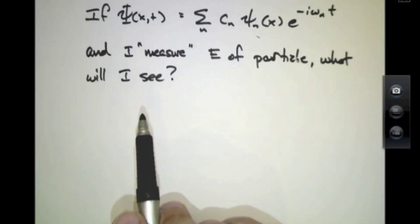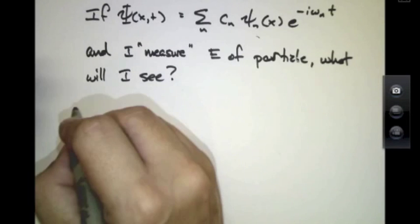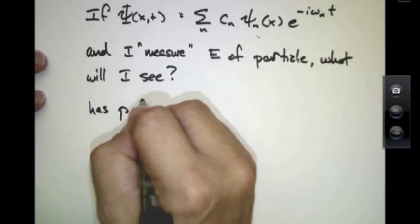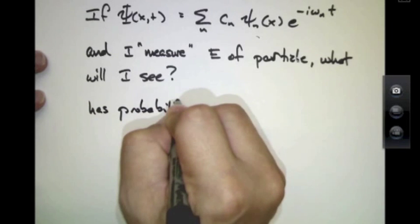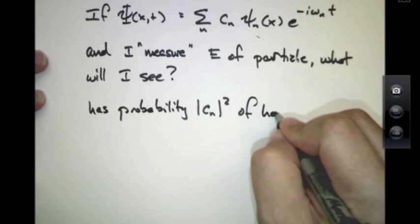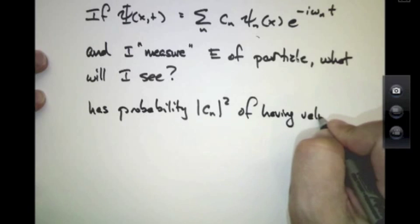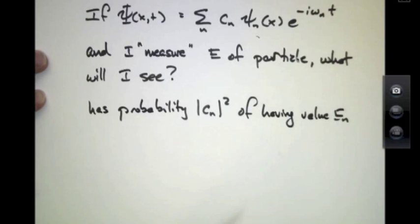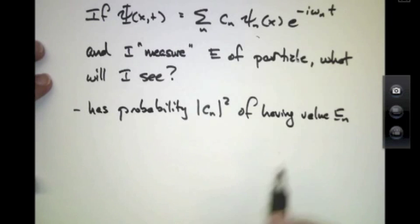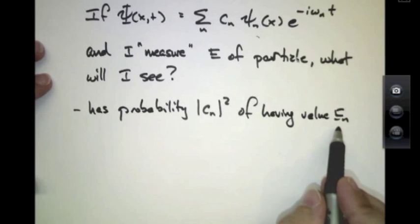What probability will it have? Well, it has the probability cn squared of having a particular energy eigenvalue, e sub n.